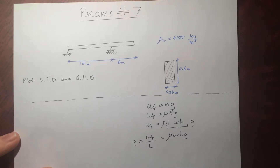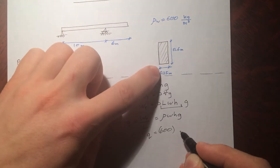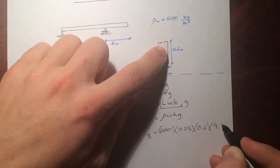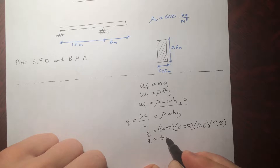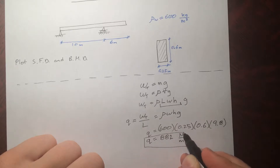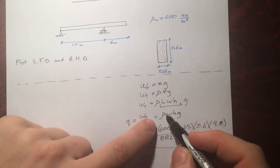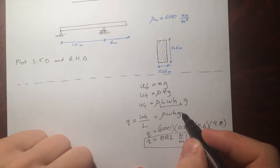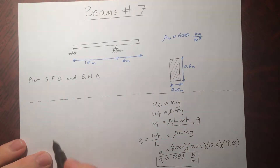What's the magnitude of Q? We take our numbers and plug them in: density is 600, times width, times height, times gravity at 9.8. You can check the units: kilograms per meter cubed times meter cubed gives kilograms per meter, then times G gives newtons per meter. So the result is in newtons per meter.